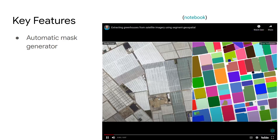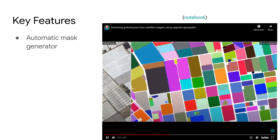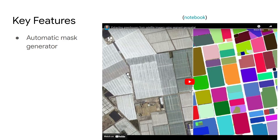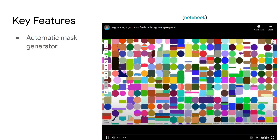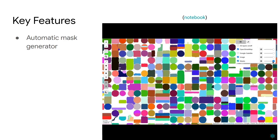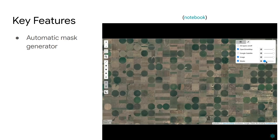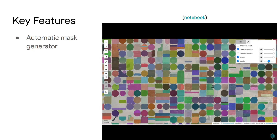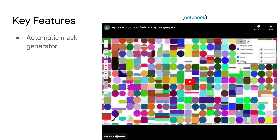Similarly, you can segment greenhouses — these are the big buildings — and it does pretty well compared to traditional pixel-based methods where you might have to spend time doing training. You can also extract agricultural field boundaries, and all you need is just an image. If you have a GPU, you're going to run very quickly depending on how big the dataset is. You can also use Segment Geospatial to compare datasets side by side.